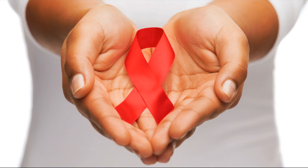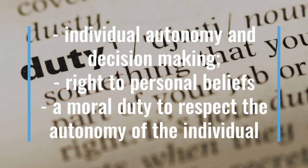Consider a new mother with HIV and a high viral load who refuses anti-retroviral therapies for herself and her baby because she believes it is God's will to take care of them both. She also insists on breastfeeding despite medical opinion, because she believes breast is best. Despite the greatest good for the greatest number under utilitarianism, deontology would actually uphold this mother's rights — her individual autonomy, decision-making, her right to personal beliefs, and a moral duty to respect her autonomy.